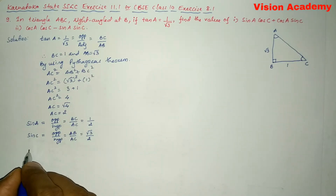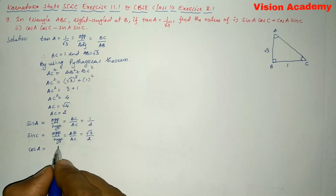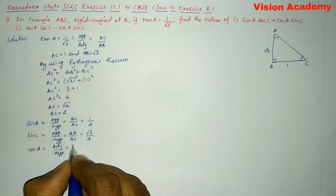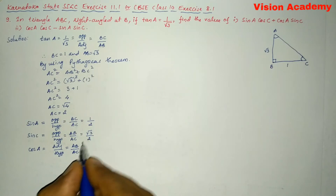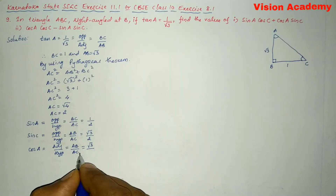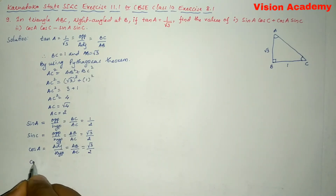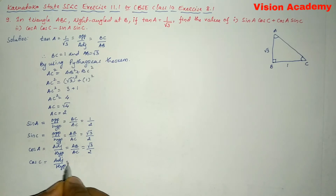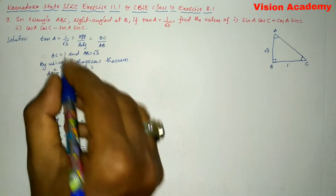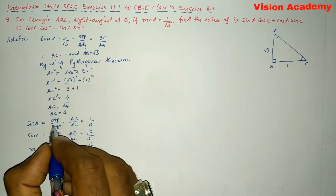Now cos A is equal to adjacent by hypotenuse. With respect to angle A, adjacent is AB and hypotenuse is AC, so cos A is square root of 3 by 2. Cos C is adjacent by hypotenuse with respect to C; adjacent is BC, so cos C is equal to BC by AC, which is 1 divided by 2.